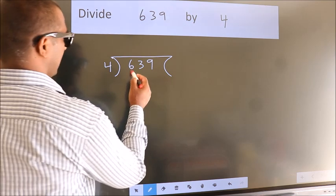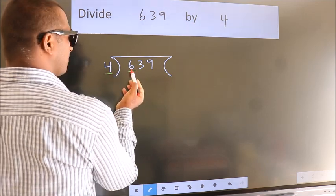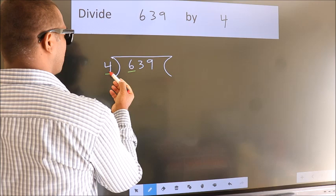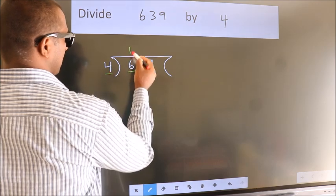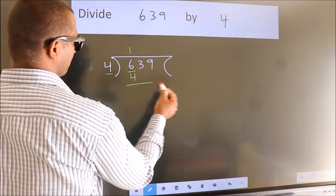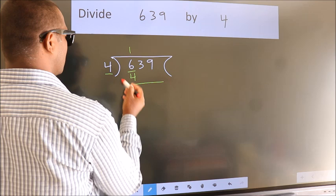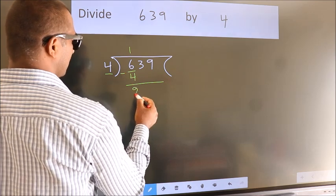Here we have 6, here 4. A number close to 6 in 4 table is 4 once 4. Now we should subtract. We get 2.